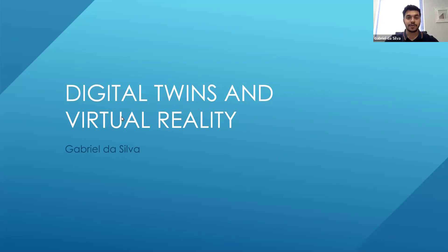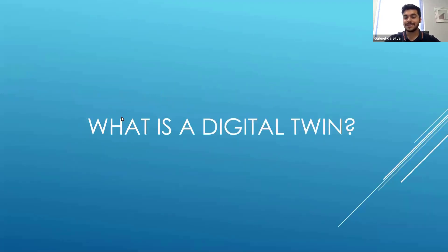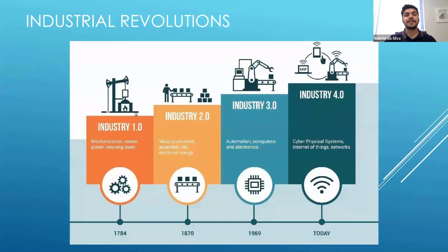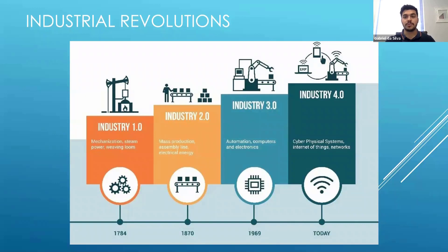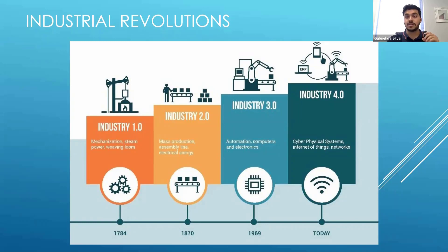I'm sure a lot of you have the question of what is a digital twin. To explain that, I just need to give you some context. We have had four industrial revolutions that started a couple of centuries ago. The first one was when we invented steam power and mechanization and things like the weaving loom. The second one happened in the late 1800s, where we started with mass production, assembly lines, and we introduced electrical energy.